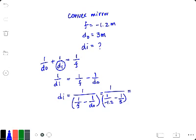And this is going to give me negative 0.87 if you round up. And this is in meters. This negative number tells me it is a virtual image, which makes sense because convex mirrors only produce virtual images.